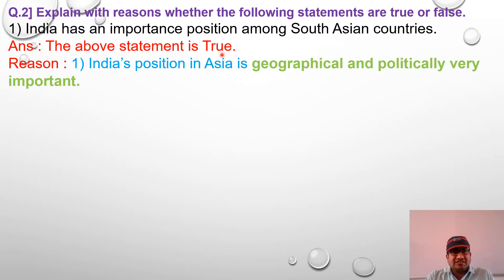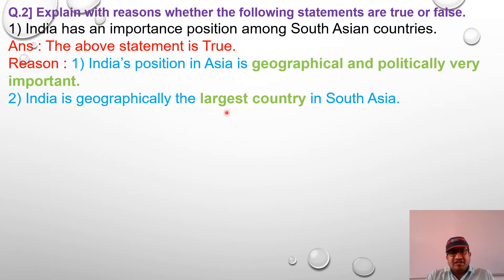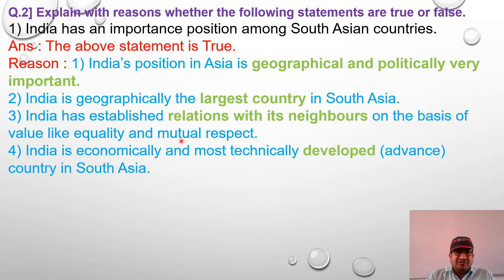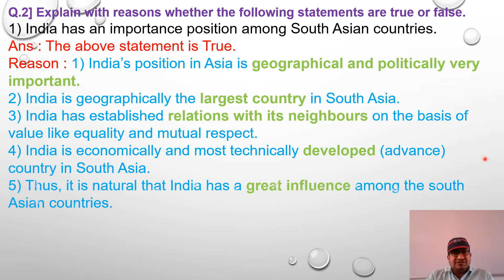India's position in South Asia is scientifically and politically very important. India is geographically the largest country in South Asia. India has established relations with its neighbors on the basis of values like equality and mutual respect. India is the most economically and technically developed country in South Asia. Thus it is natural that India has great influence among the South Asian countries.